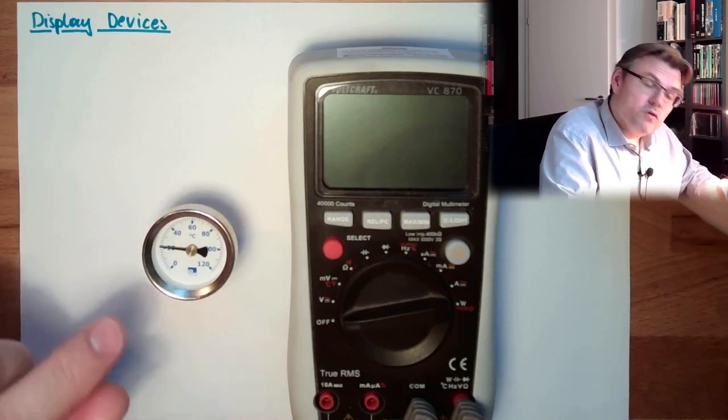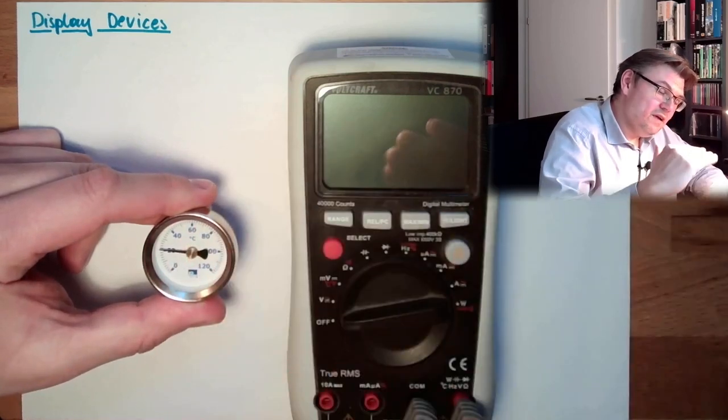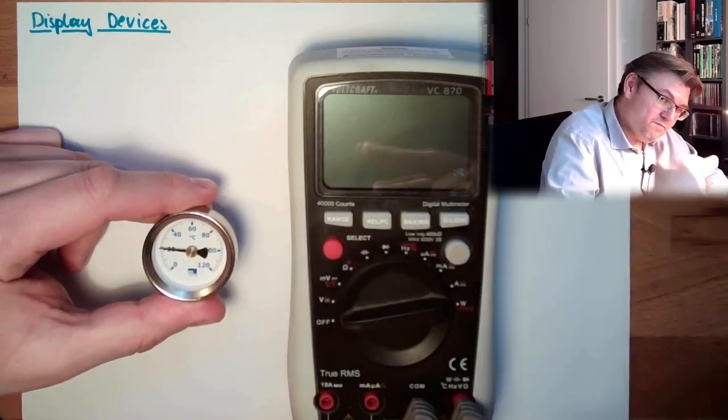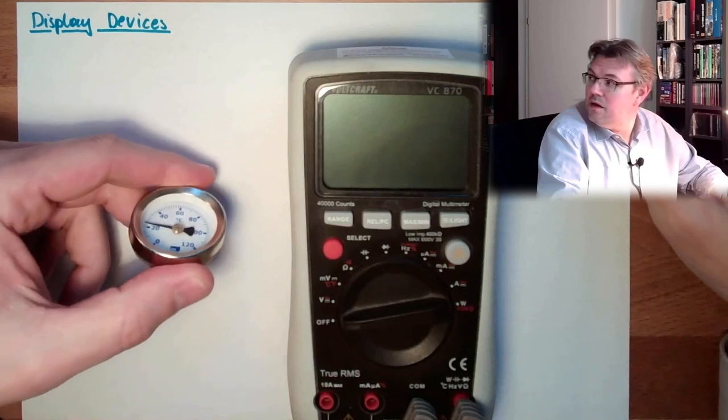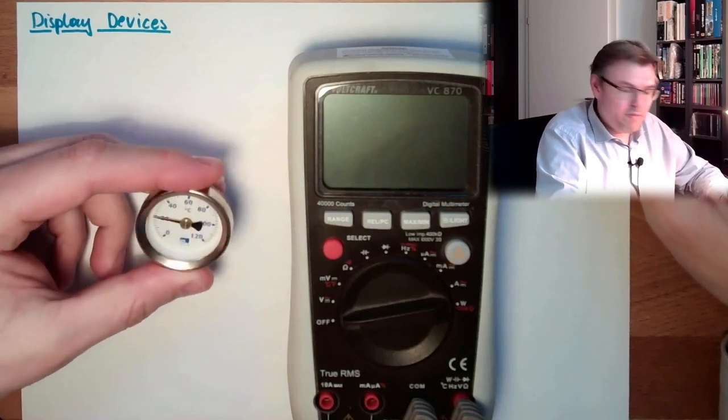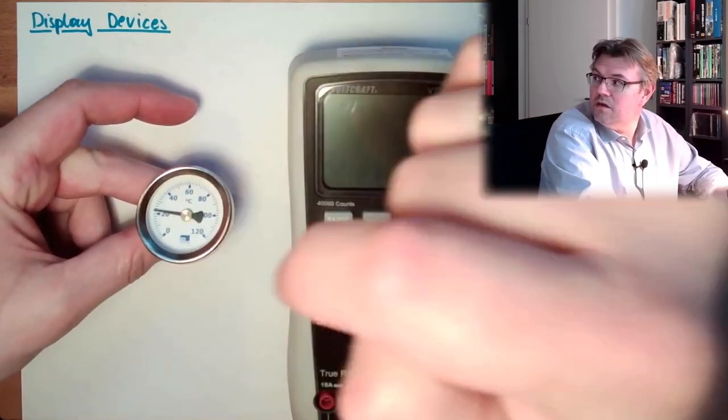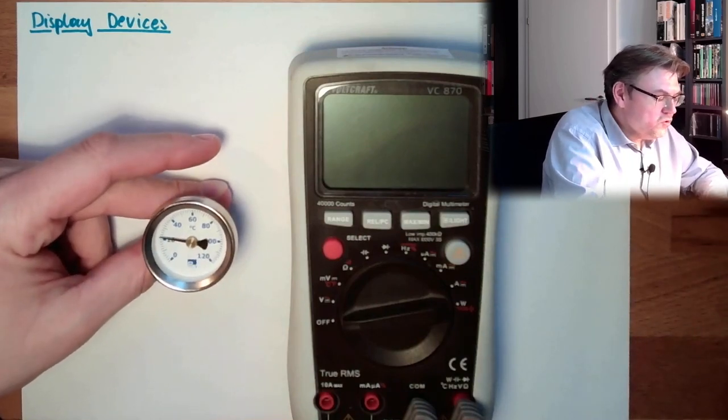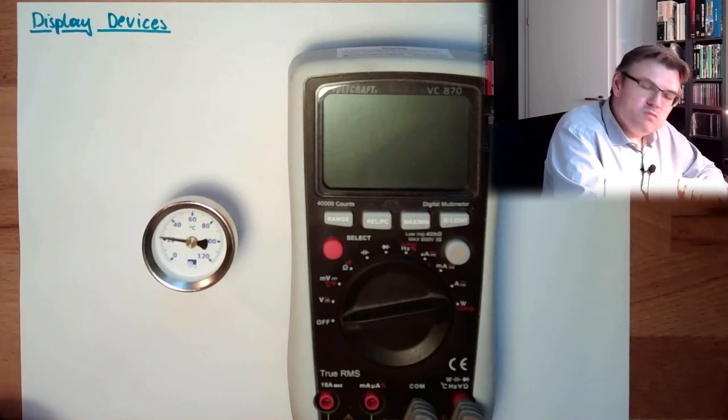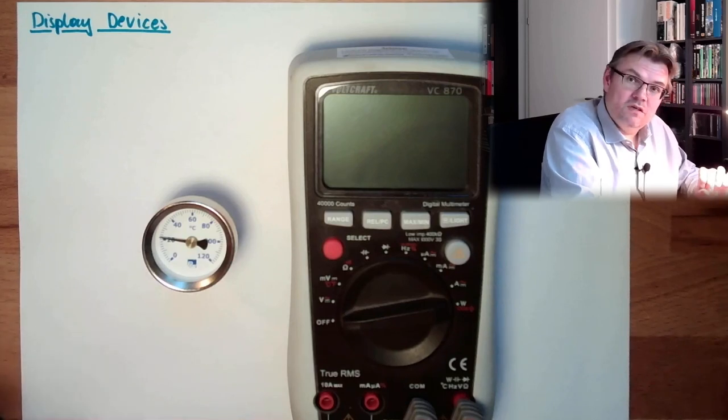However, we also have some parallax. So the reading is different because there is a distance between the pointer and the scale. If I look at that way, or that way, or that way, so depending on which way I'm looking, I read another value. Of course, the correct way is to look straight, then alright.